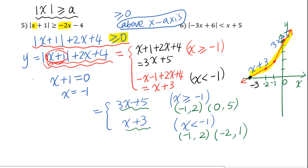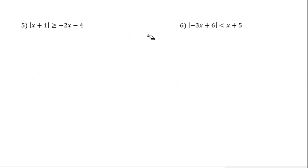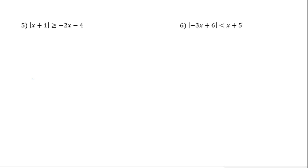Therefore, x greater than or equal to negative 3 is the solution to this absolute value inequality. Now let's go to number 6.